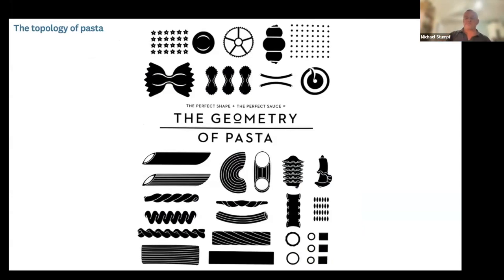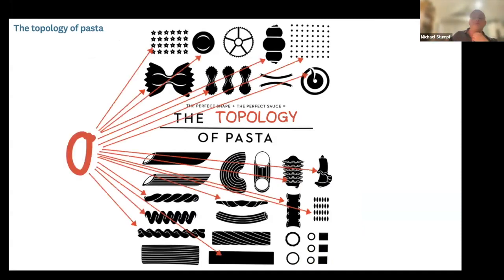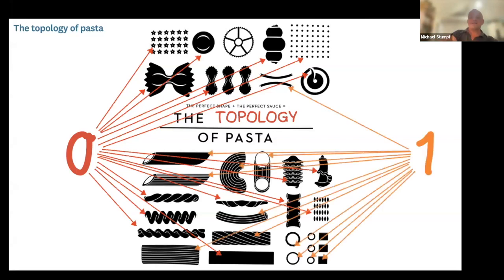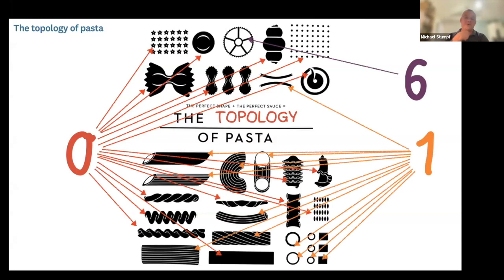I use pasta as an illustration of topology. We're not looking at the geometry of pasta but the topology — specifically counting the number of holes. Solid pasta shapes like spaghetti have zero holes. Tubular shapes like rigatoni and penne each have one hole and are topologically equivalent to each other. My son's favorite pasta has six holes — you can't transform it into any other shape without cutting or gluing. This gives us distinct topology classes.